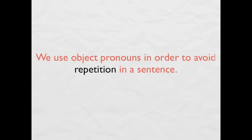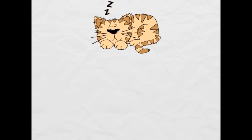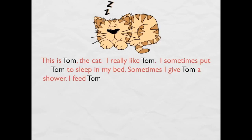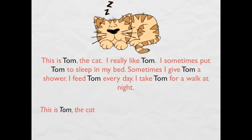We use object pronouns in order to avoid repetition in a sentence. For example: this is Tom the cat. I really like Tom. I sometimes put Tom to sleep in my bed. Sometimes I give Tom a shower. I feed Tom every day. I take Tom for a walk at night.